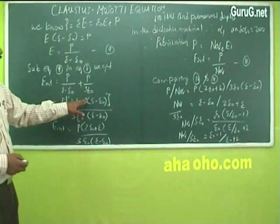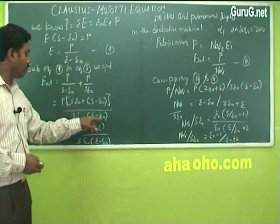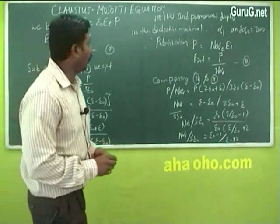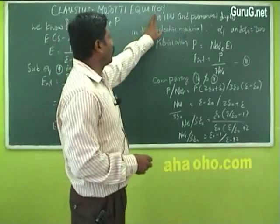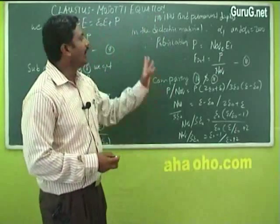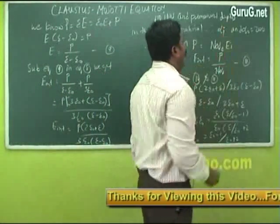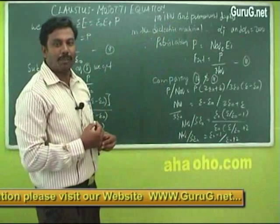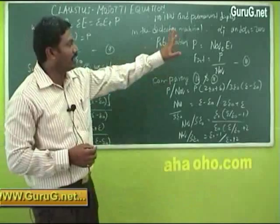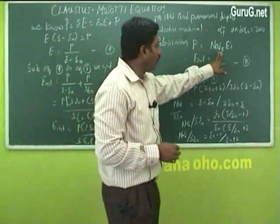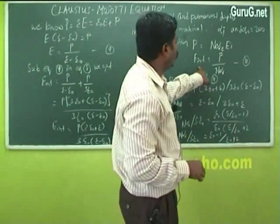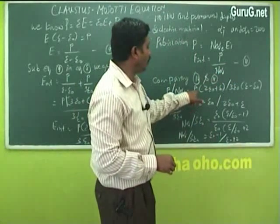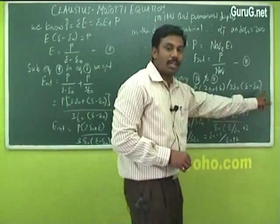On simplifying: E_internal = P·(3ε₀ + ε - ε₀) / (3ε₀·(ε - ε₀)) = P·(2ε₀ + ε) / (3ε₀·(ε - ε₀)). Since for dielectric materials no ions and permanent dipole moments are present, the ionic and orientation polarizations are zero. Therefore polarization P = N·α·E_internal, giving E_internal = P / (N·α).